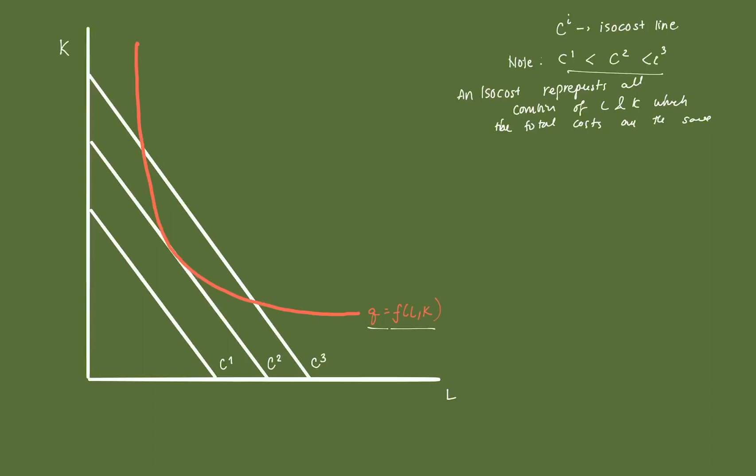Any point along a given isocost line gives the same total cost. The further northeast the line is, the higher the cost: C1 is less than C2 is less than C3. The slope of each isocost is negative W over R, because each isocost is downward sloping in K-L space. The isoquant represents the constraint that the firm must produce Q-star units of output.